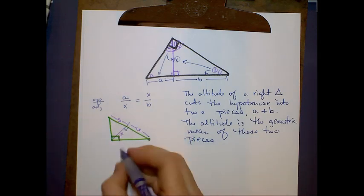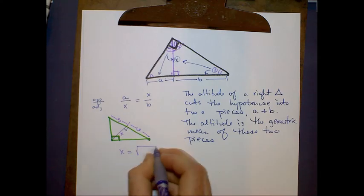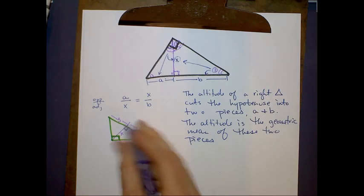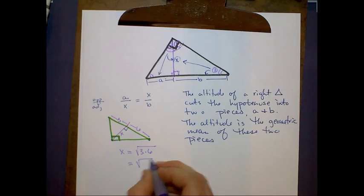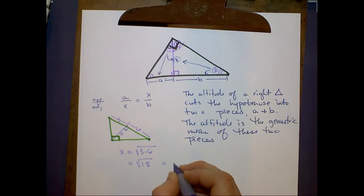I could solve for the altitude by saying that it is the square root of the product of these two pieces, which means it's the square root of 18 or it is three radical two.